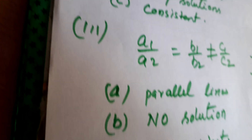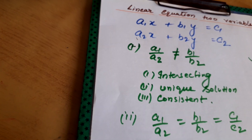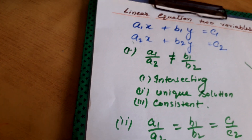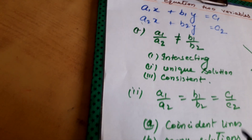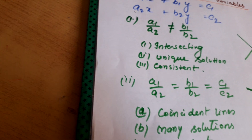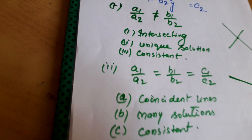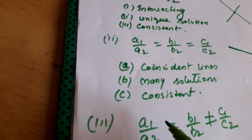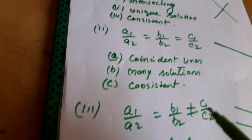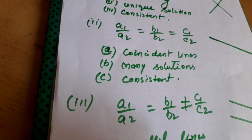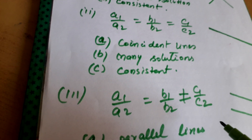Thus, we have seen three conditions. First, a1 upon a2 is not equal to b1 upon b2. Second, a1 upon a2 equal to b1 upon b2 equal to c1 upon c2. And the third condition is a1 upon a2 equal to b1 upon b2, not equal to c1 upon c2.